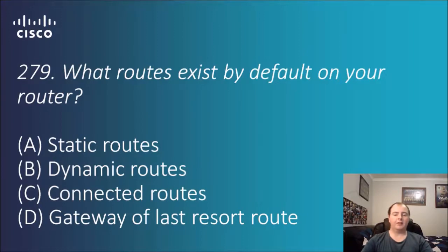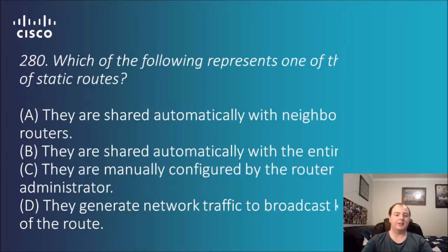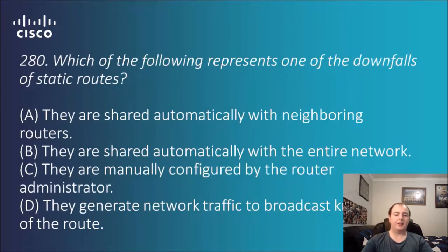Question 279: what routes exist by default on your router? Options are static routes, dynamic routes, connected routes, or gateway of last resort route. By default it is C — connected routes — because the router is connected to those networks, and that is how C is the answer.